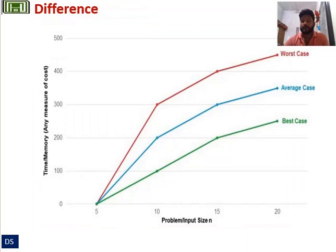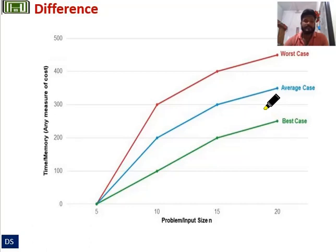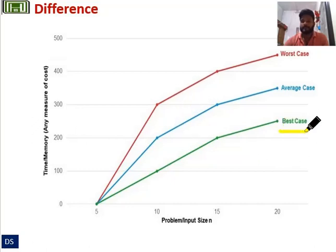This is the pictorial representation. In the best case, you will get the result in a fraction of a second. Average case takes more time than best case. Then worst case means it takes more time or more memory to execute a program. Keep these cases in mind: best case, average case, and worst case.